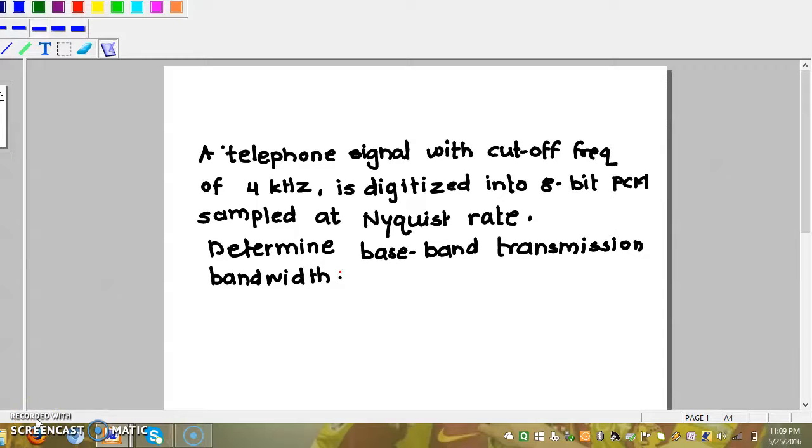Bandwidth of a PCM system is one-half of the signaling rate. For example, consider a telephone signal with cutoff frequency of 4 kHz is digitized into 8-bit PCM sampled at Nyquist rate. Determine baseband transmission bandwidth.